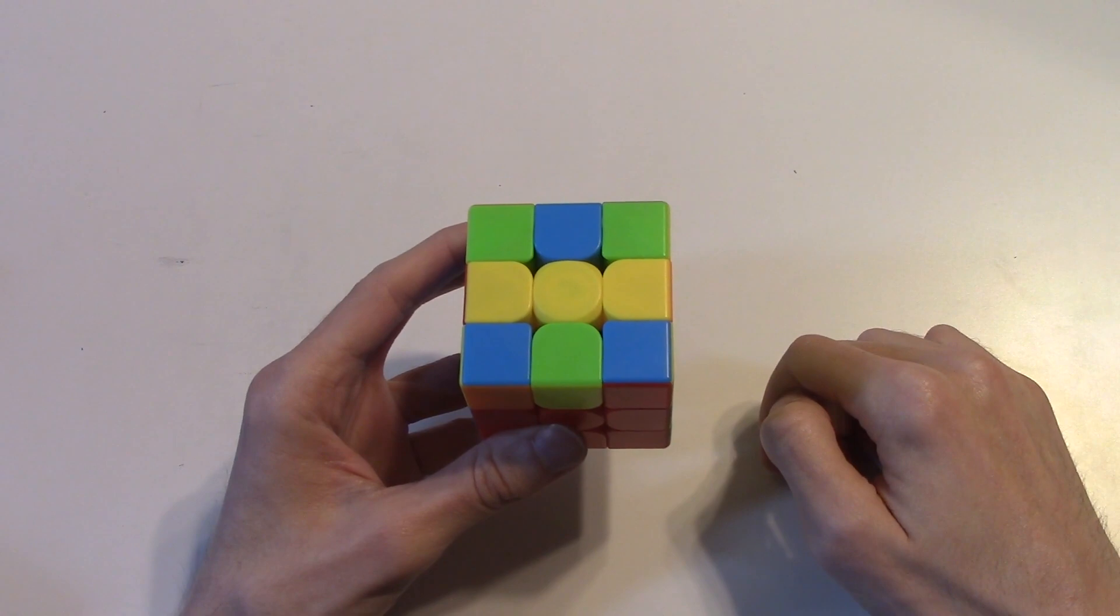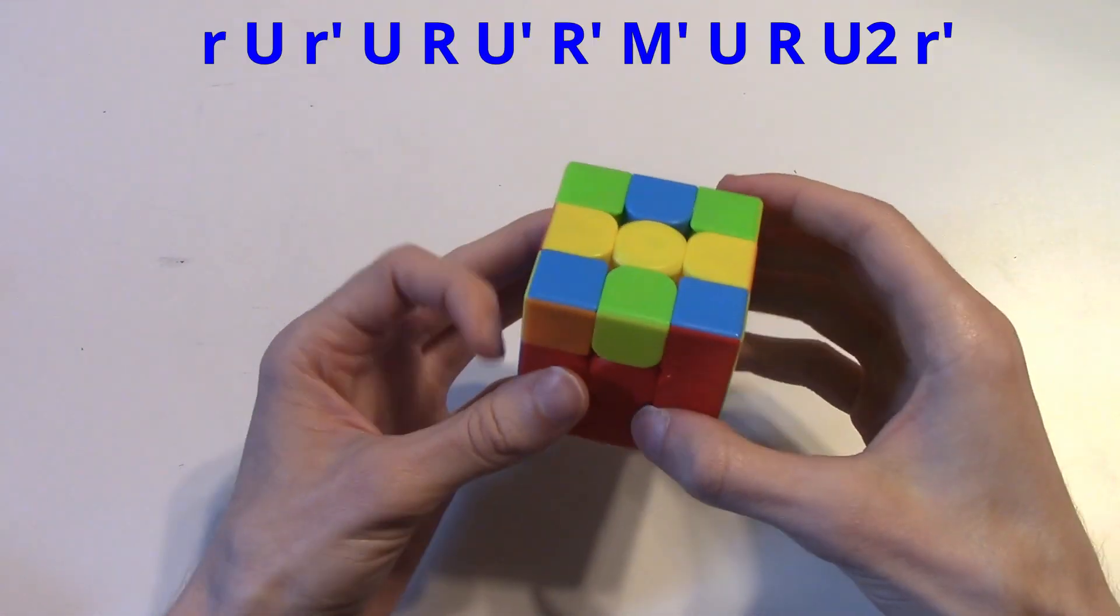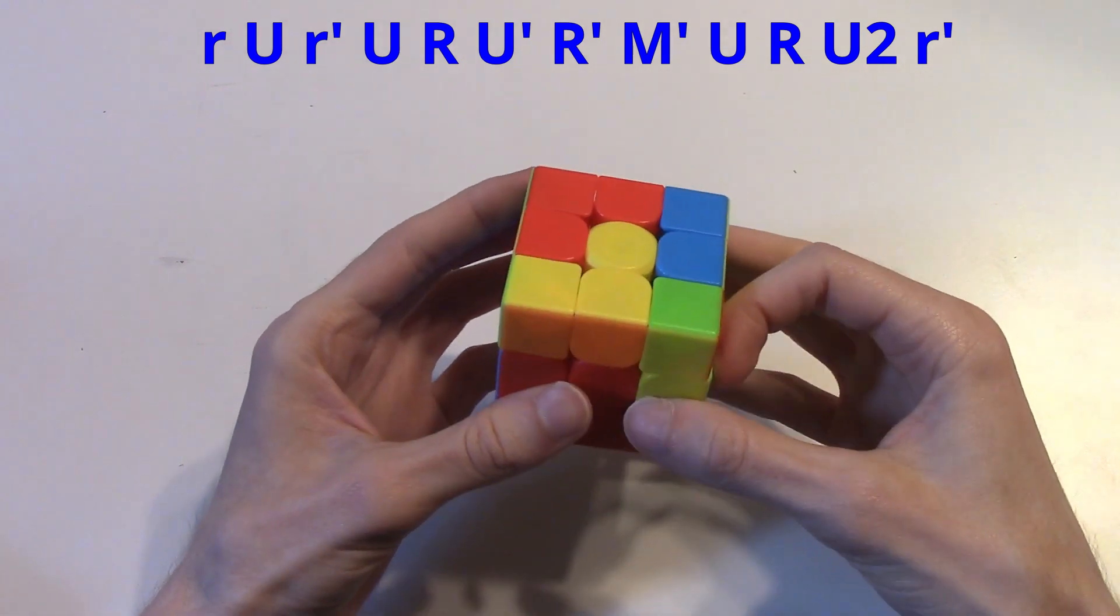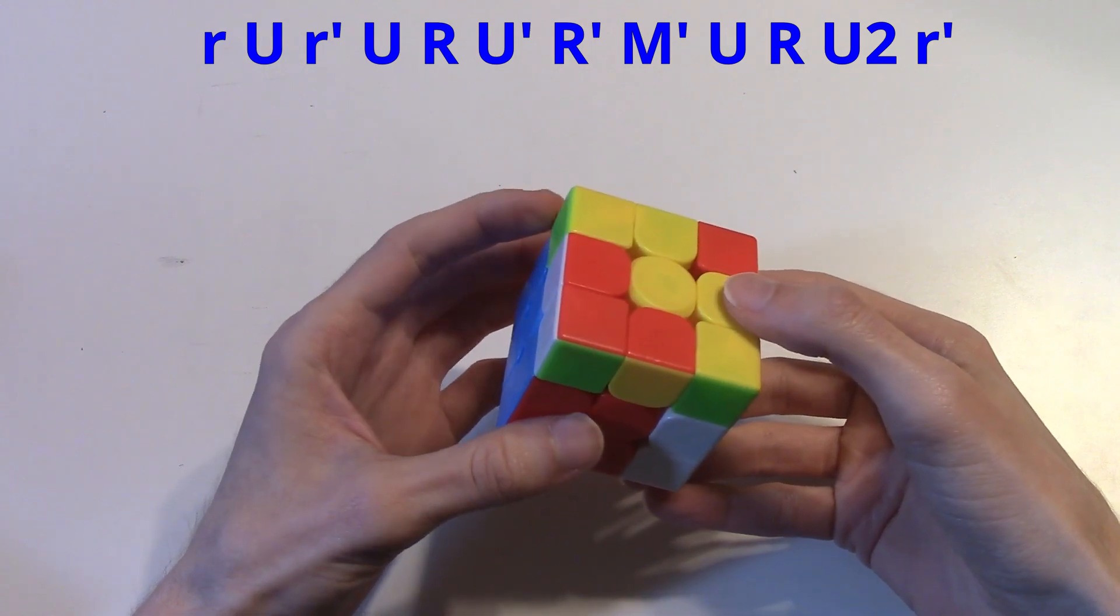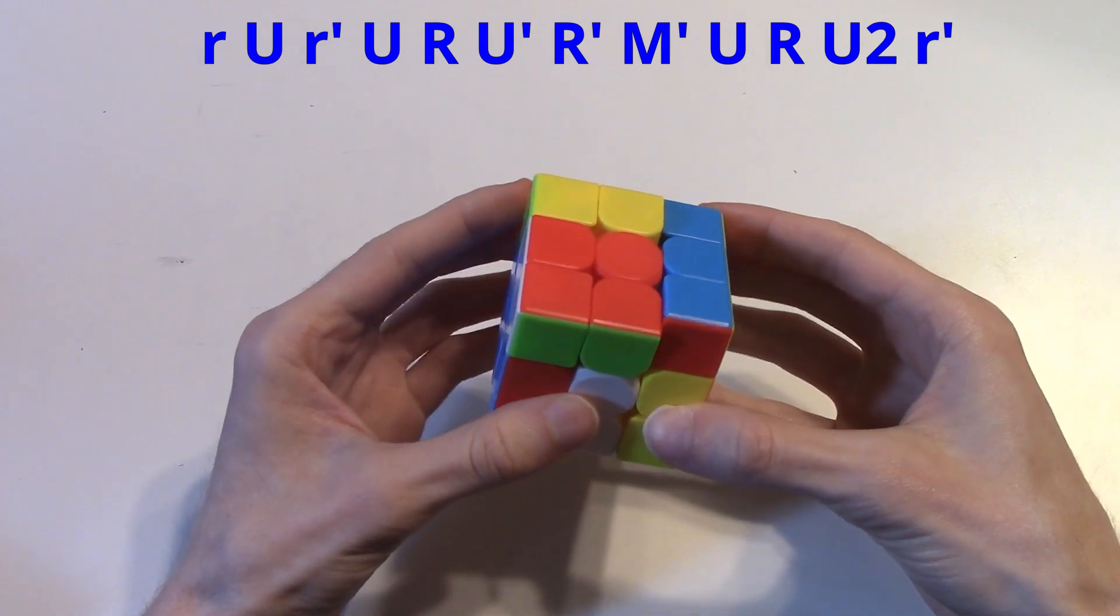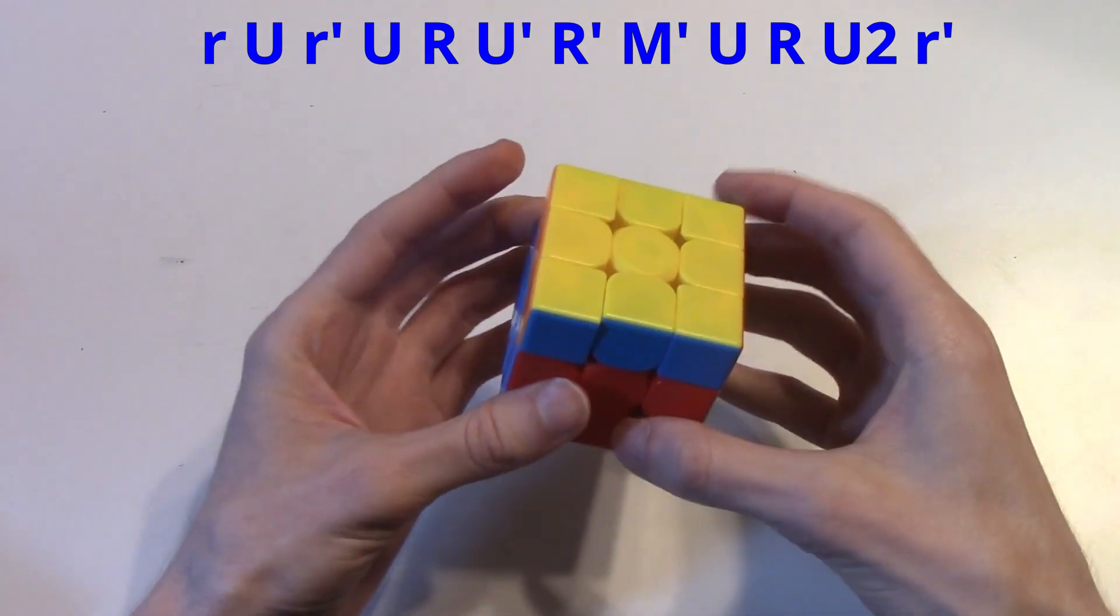The algorithm for this is very similar to a wide double soon, and it goes like this. Wide r u, and then wide r prime u, and then continue r u prime, and as you're doing r prime, do an m prime at the same time. And then u, and then finish just like a wide double soon, r u2, wide r prime.